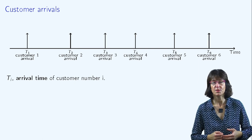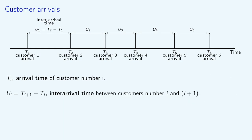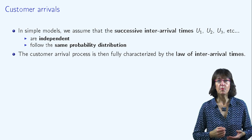The interarrival time denotes the time between two consecutive customers. It's denoted here as ui, which is equal to Ti+1 minus Ti, and represents the interval between the arrival of customer i and the arrival of customer i+1.